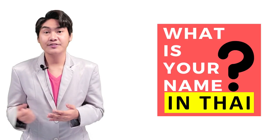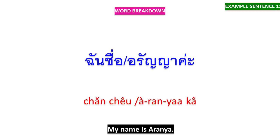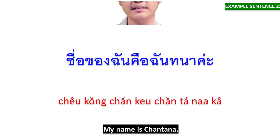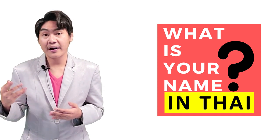If you are female speakers, you can respond like this: ฉันชื่ออรัญญาค่ะ — ฉันชื่อ means 'my name'. ชื่อของฉันคือฉันทนาค่ะ — ชื่อของฉัน means 'my name', คือ means 'is'. ค่ะ is a particle used to show the politeness of female speakers. These are examples where you tell them your real name.